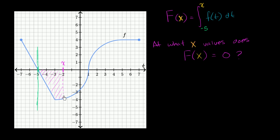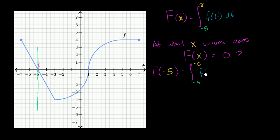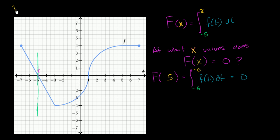Now, what x values make this 0? One might jump out at you: if we put x right at negative 5, then there's no width and there's not going to be any area. So capital F of negative 5, which is equal to the definite integral between t is equal to negative 5 and t is equal to negative 5 of f of t dt — you have the same boundaries, so this is going to be 0. We can list x equals negative 5 as one of the x values that makes capital F of x equal 0.